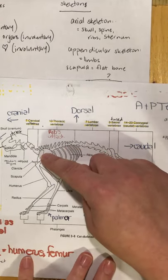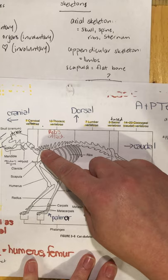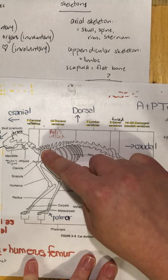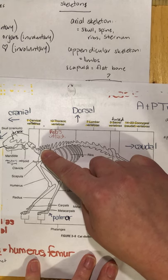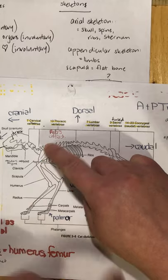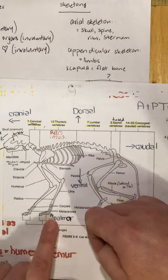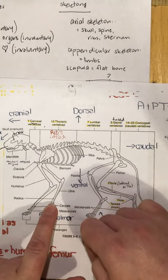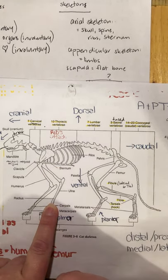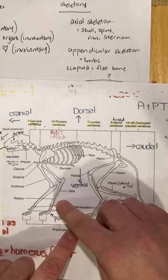If I asked: which bone is immediately distal to the scapula? The scapula is the reference point — the bone immediately distal, further from the point of attachment but right next to the scapula, is the humerus. If I asked where is the humerus in relation to the carpals — the carpals are the anchor, and the humerus is closer to the point of attachment, so it's more proximal. The humerus is proximal to the carpals.